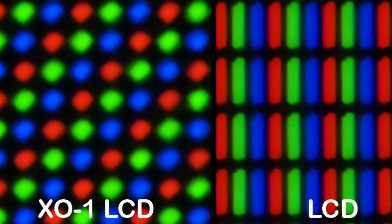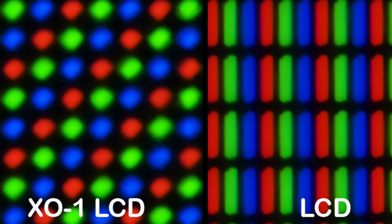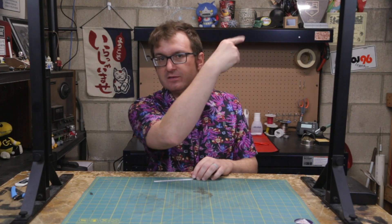Before we start talking about replicating colors, we should probably talk about how colors on a modern display are created. Most modern screens are made up of tiny picture elements, or pixels, which are actually made up of three color elements, or subpixels, that are each individually addressable. Note that this is not the case when it comes to CRT displays — they employ an entirely different technology that we won't be exploring in this video. If you want to learn about how CRT images are formed, Technology Connections has a fantastic piece about it.